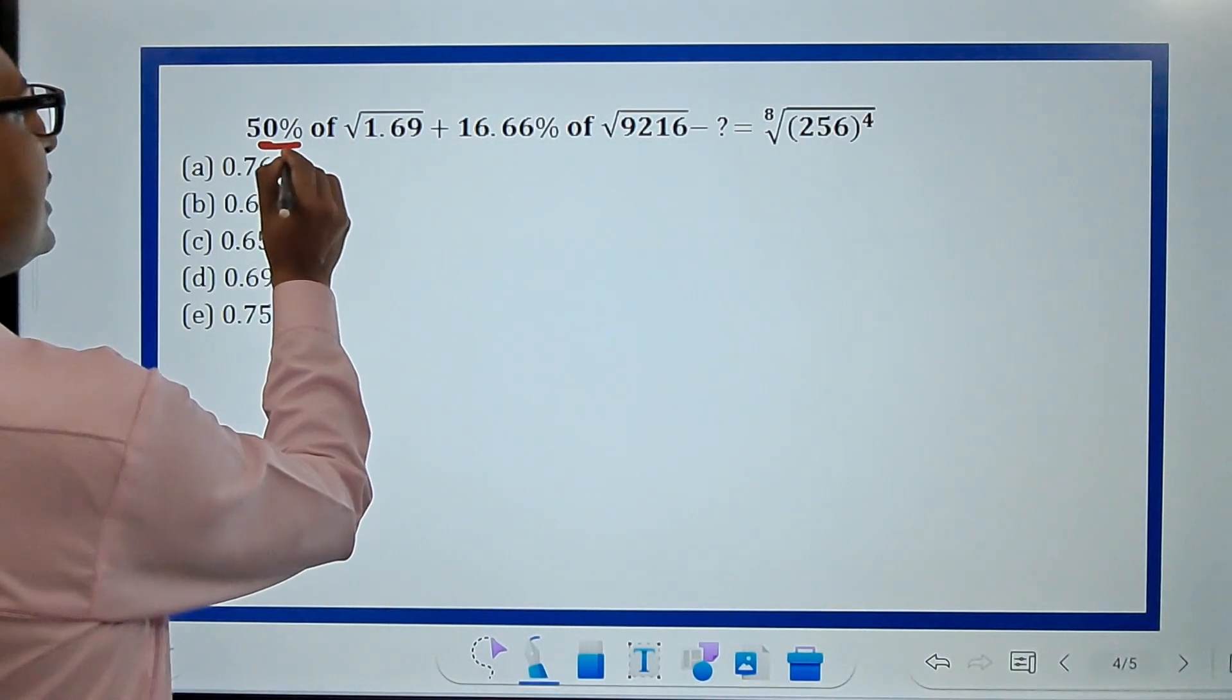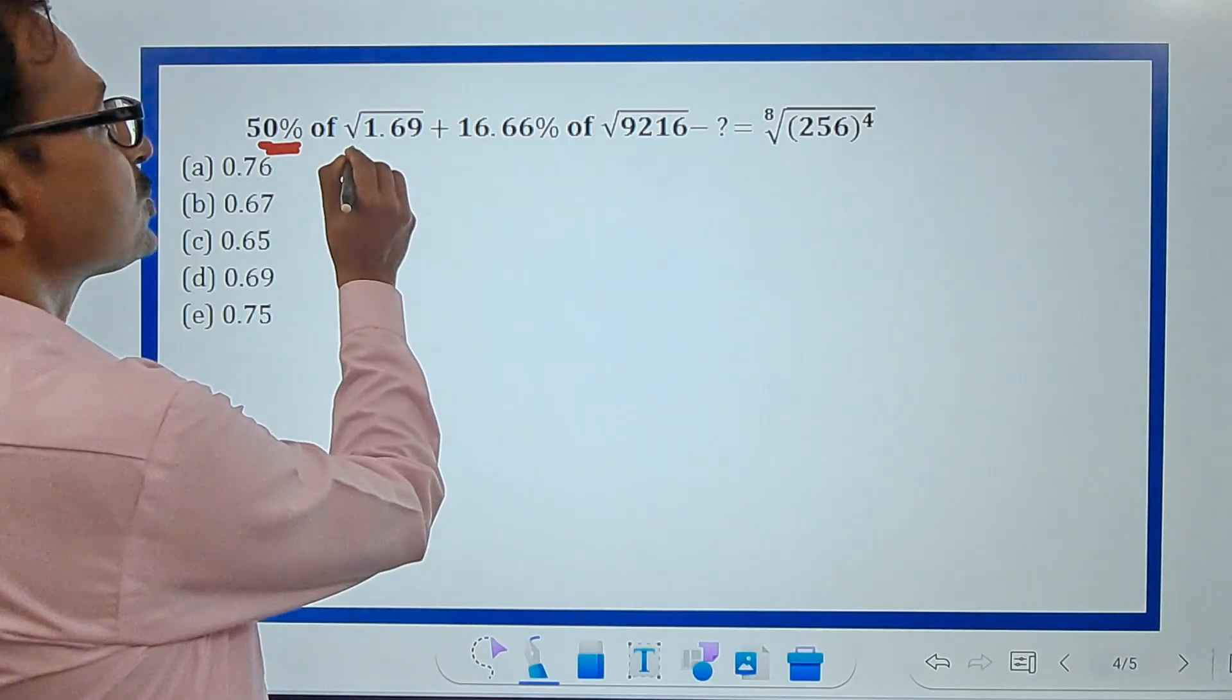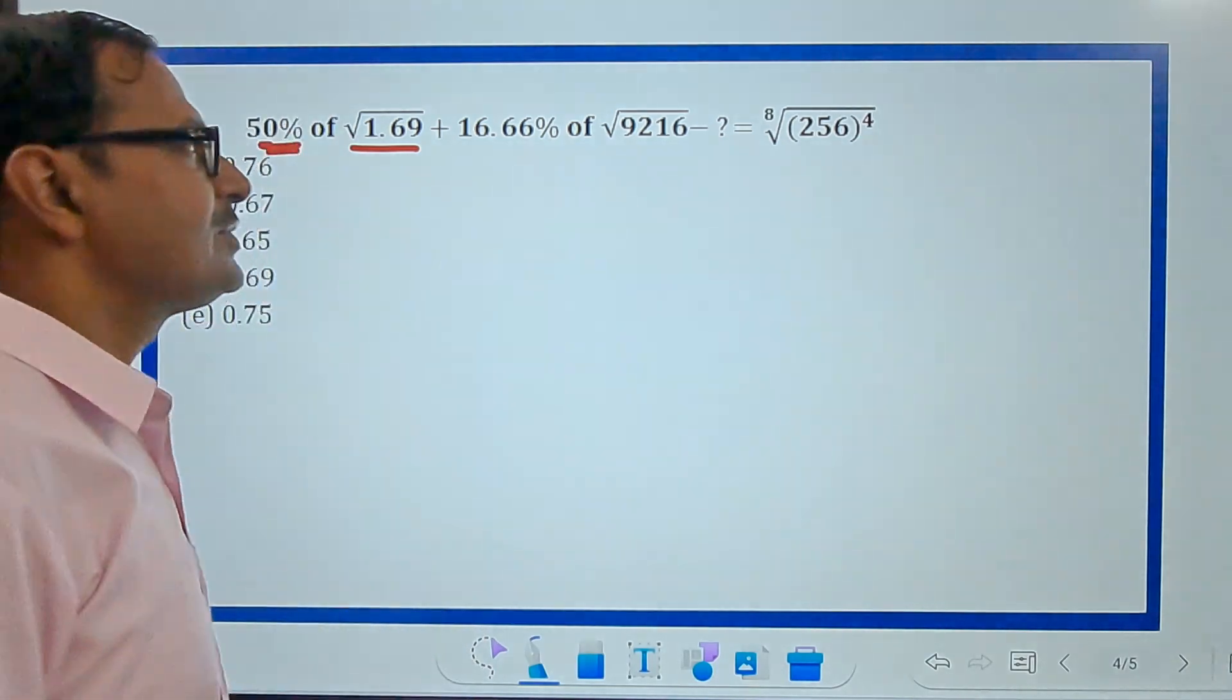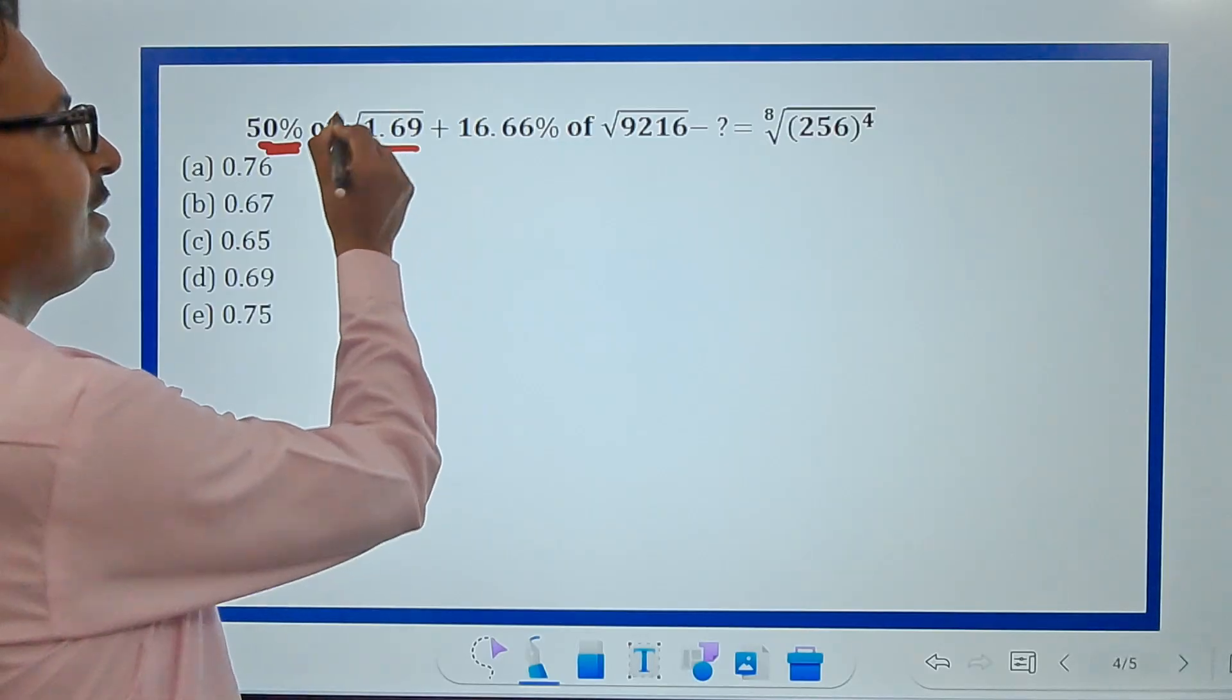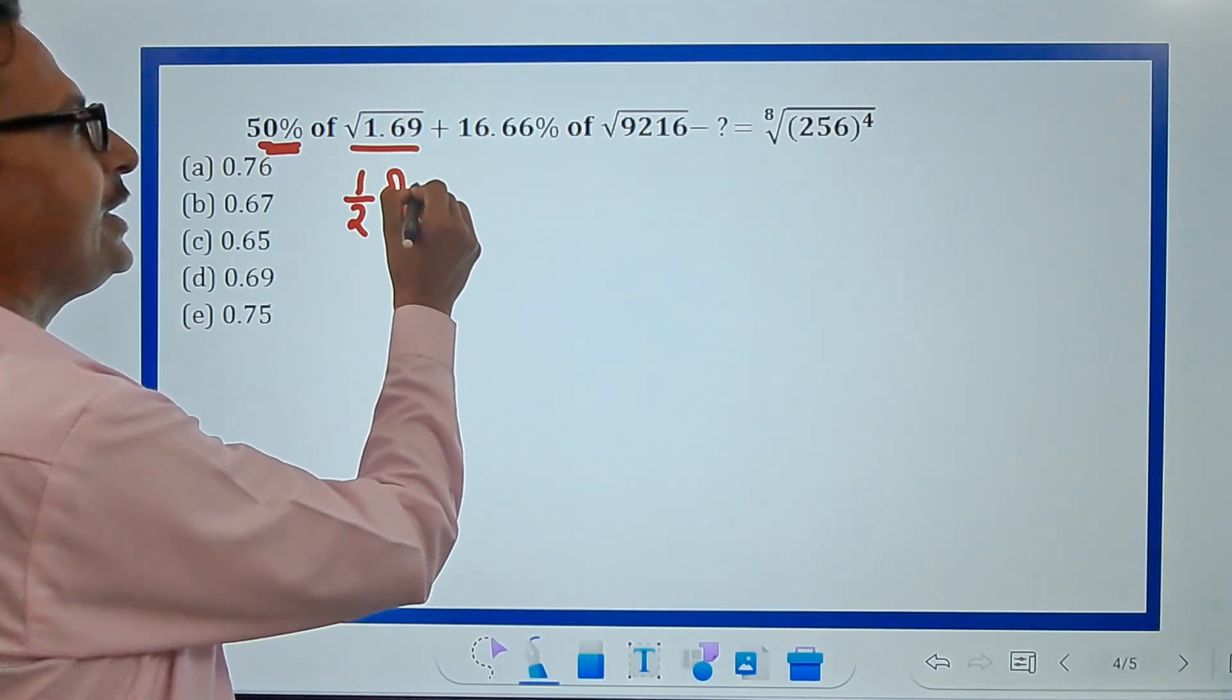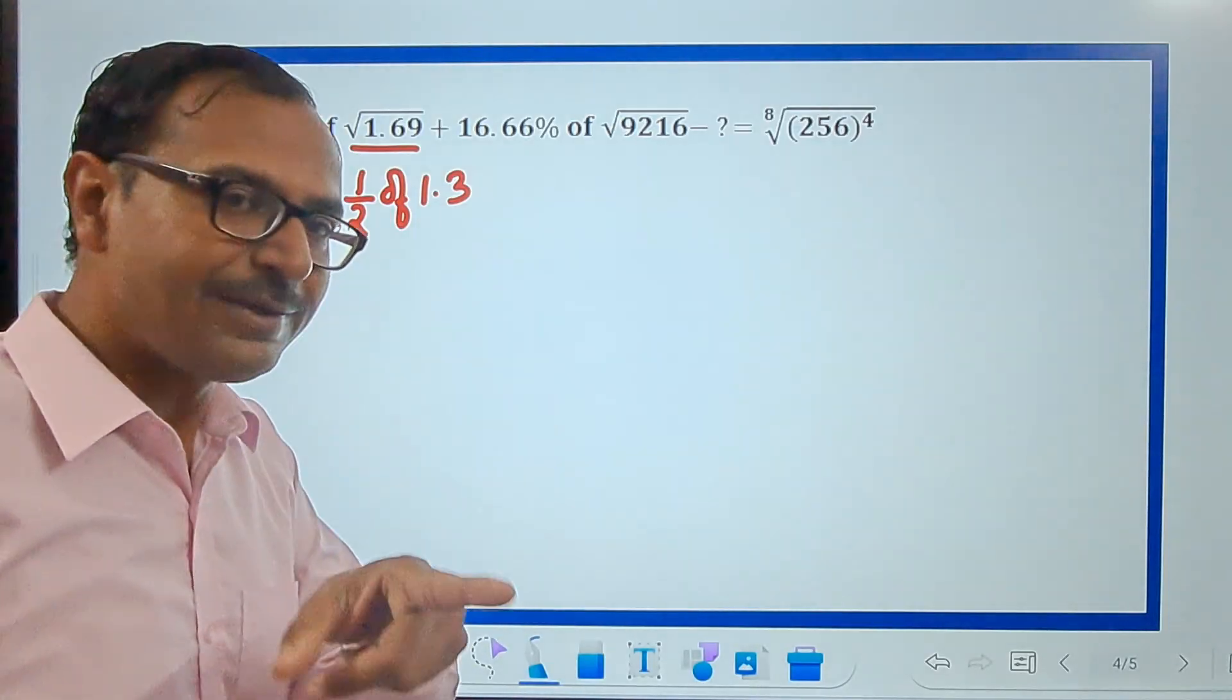50 percent is pretty obvious—it's half of that number. You should know square root of 1.69. 169 is a perfect square, that's 13 squared. When you put a decimal two digits from the right, this is actually half, that is 50 percent of 1.3.